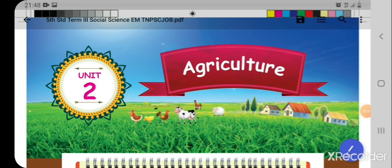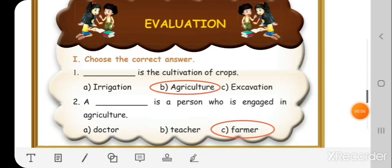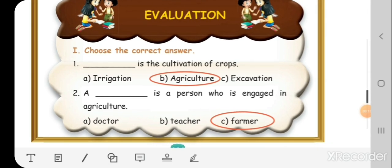Unit 2 Agriculture Book Back Evaluation. Evaluation Part Tamil Nadu 1. Choose the correct answer.